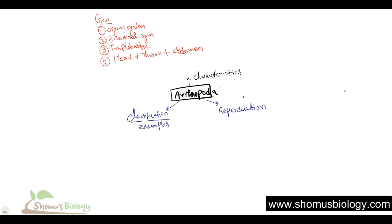Now, one thing I want to clarify is that most people, when we say arthropod, actually think about insects. But arthropods do not only mean insects — insect is a type of arthropod. Apart from insects, there are other examples such as crustaceans. Not all arthropods share the same structures, but all of them have jointed legs — that is a very common feature among all arthropods.